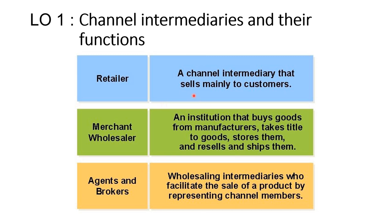To summarize: retailers sell to consumers — typically individuals buying for personal or household consumption. Merchant wholesalers buy from manufacturers in very large quantities and then sell in smaller quantities to retailers. Retailers then sell the products individually to consumers. Agents and brokers do not take title to the product; they only facilitate the sale, representing that particular manufacturer or channel members.